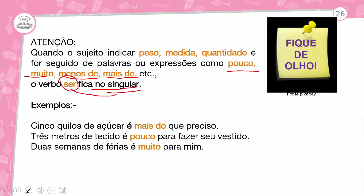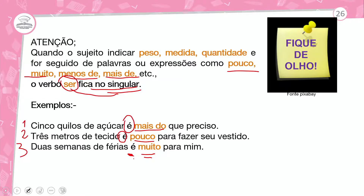Fique de olho: quando o sujeito indicar peso, medida ou quantidade, seguido de expressões como 'pouco', 'muito', 'menos de', 'mais de', entre outras, o verbo ser fica no singular. Exemplos: 'cinco quilos de açúcar é mais do que preciso', 'três metros de tecido é pouco para fazer seu vestido', 'duas semanas de férias é pouco para mim'.